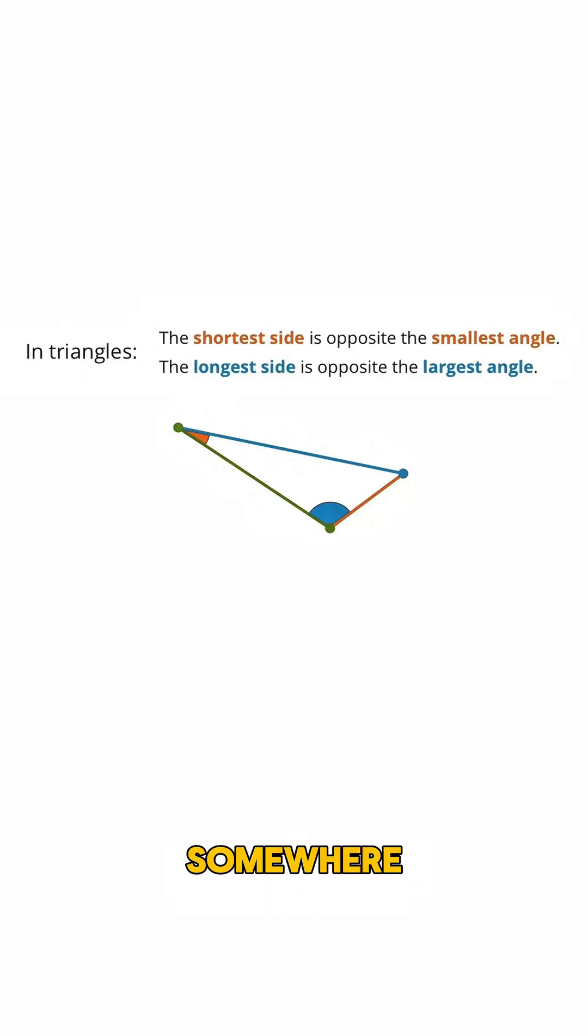And what about the middle side, whose length is somewhere between the shortest and the longest? It's opposite from the middle angle, whose measure is somewhere between the smallest and largest angles.